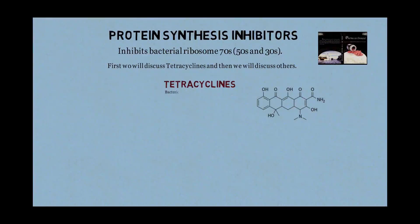The name 'tetracycline' tells us its structure: 'tetra' means four, and 'cyclin' means rings — so it consists of four fused rings. Tetracycline is bacteriostatic, meaning it stops the growth of bacteria rather than killing them outright.